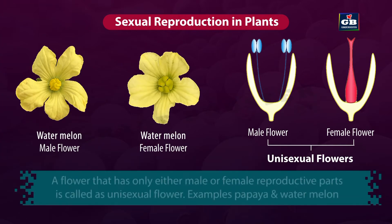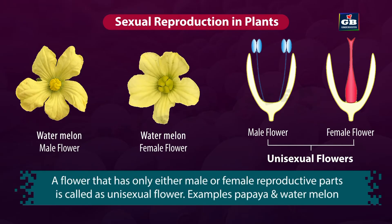A flower that has only either male or female reproductive parts is called a unisexual flower. Examples: papaya and watermelon.